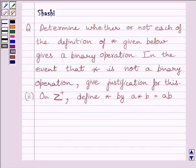Let us start the solution now. We are given A star B is equal to AB. We have to check if star is a binary operation on set of positive integers.